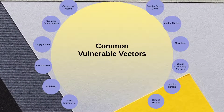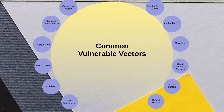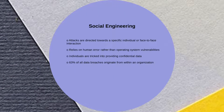We will now examine some of the more common vulnerable vectors. The first vector is social engineering. These attacks are directed towards a specific individual. Social engineering relies on human error rather than on operating system vulnerabilities. Individuals are tricked into providing confidential data.